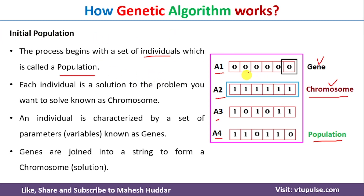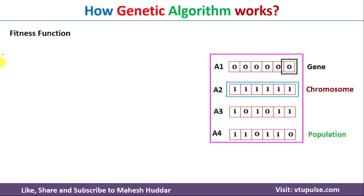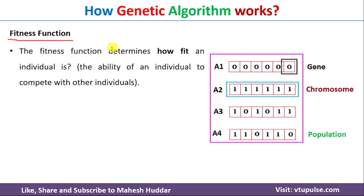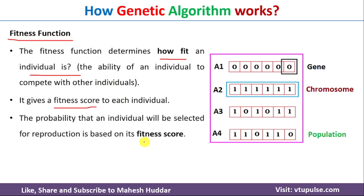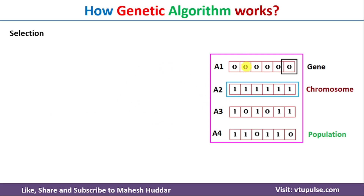Once we have the initial population, we need to assign a fitness value to each individual solution or chromosome. This is done with the help of the fitness function. The fitness function determines how fit an individual is — the fitness value of each individual solution is identified with the help of the fitness function, and based on this fitness score we will select individuals for the next crossover.